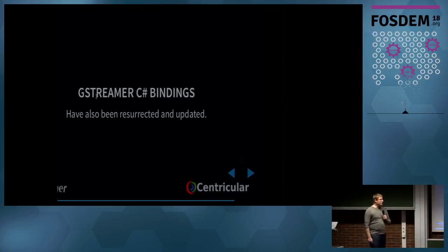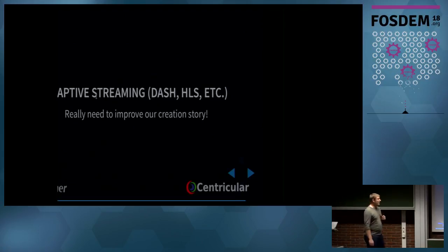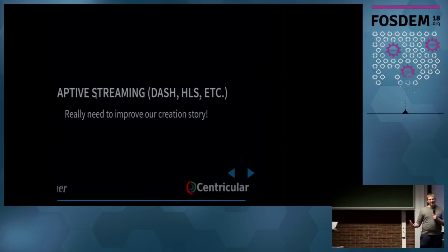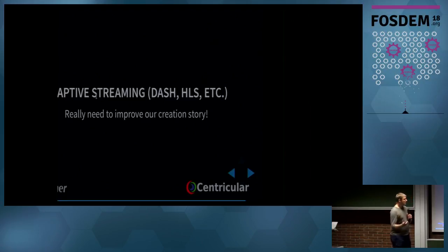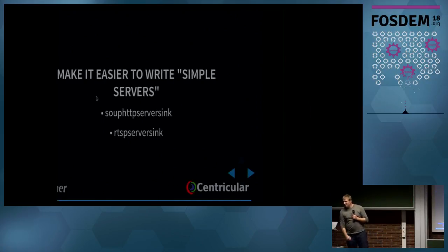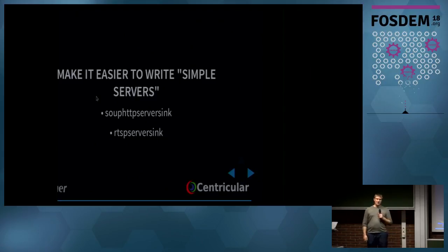Our GStreamer C# bindings have also been rejuvenated and should be up to date now. One thing I'd like to improve is that while the adaptive streaming client side is really well supported, the production side isn't as nicely supported. HLSSink exists but it's not that nice to use. RTSP server has been a massive success because it's so easy and powerful — it would be really nice to have something similar for DASH and HLS. Writing simple servers should be easier, just like a sink element or HTTP server element — people want to just run a pipeline and serve their webcam without writing code.